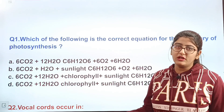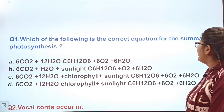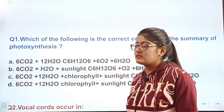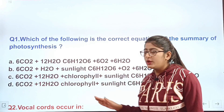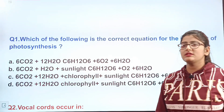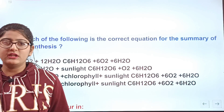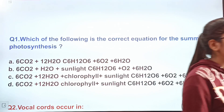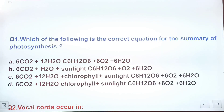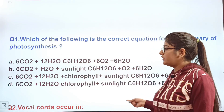Question 1: Which of the following is the correct equation for the summary of photosynthesis? Options A, B, C, D — four equations are given. Write down the correct answer in the comment section. I'm not reading the equation; you can see it on screen. Which equation is completely correct — A, B, C, or D? Tell me quickly in the comments.